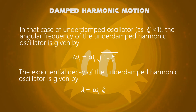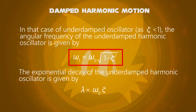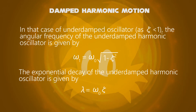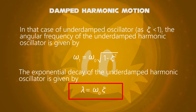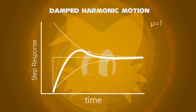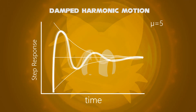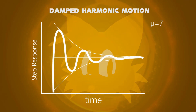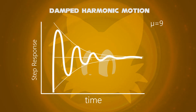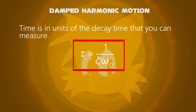In the case of the underdamped oscillator, the angular frequency is given by omega 1 equals omega naught times the square root of 1 minus zeta squared. The exponential decay of the underdamped harmonic oscillator is given by lambda equals omega naught times zeta. The graph of step response will be depicted as follows: we can determine the decay of time as the oscillation damps down according to the factor of mu, equal to the given angular frequency. When the mu value increases, the number of oscillations will increase. The decay time is given by tau equals 1 over zeta times omega naught.